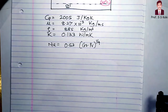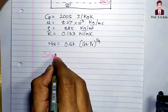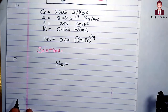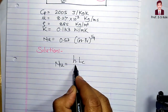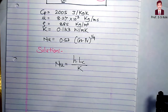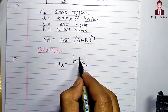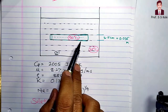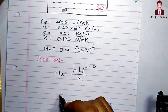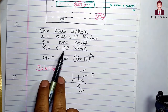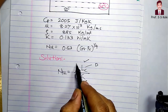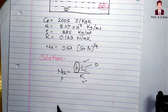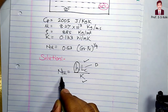H can be determined using the Nusselt number formula: Nu = H·Lc / K. To find H, I need Lc, K, and the Nusselt number. Since this is a horizontal tube, the characteristic length Lc is the diameter, which is known. K is given as 0.133 W/m·K. Nusselt number is unknown, so I need to determine it.